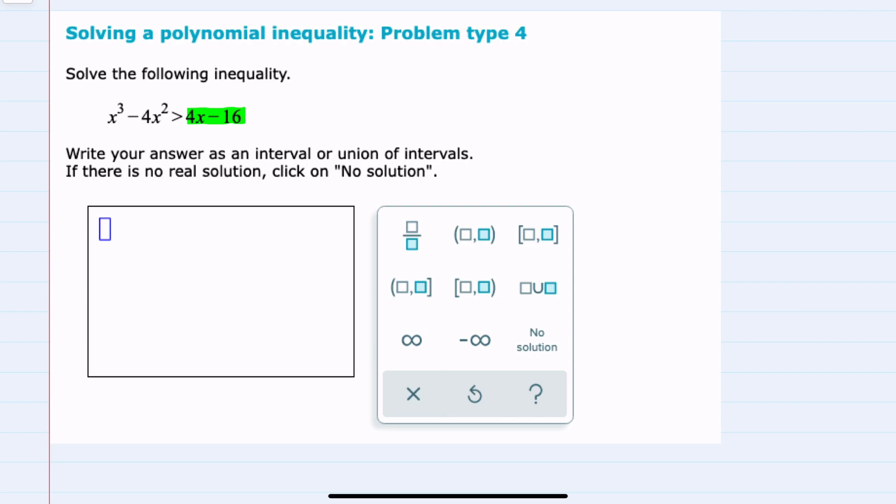And I can do that by subtracting 4x from both sides and adding 16 to both sides. This would cancel everything on the right, giving me a 0.